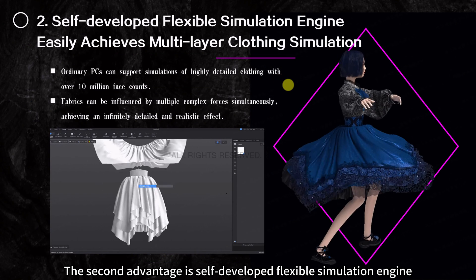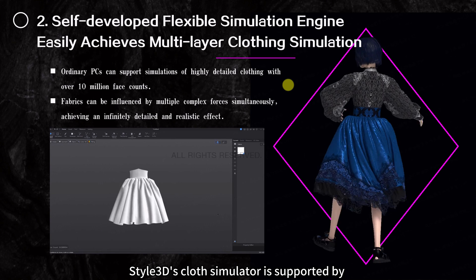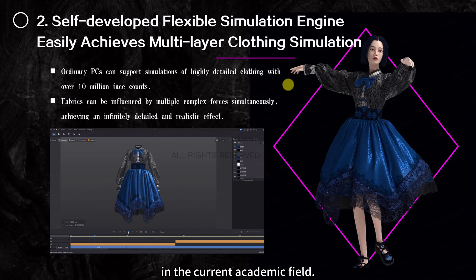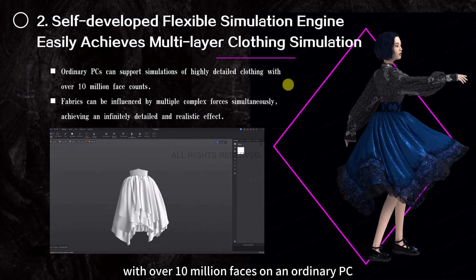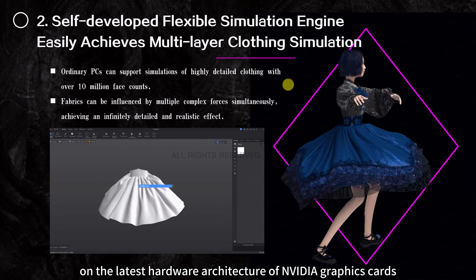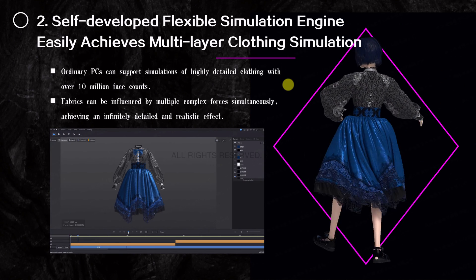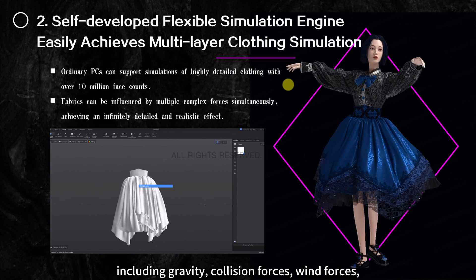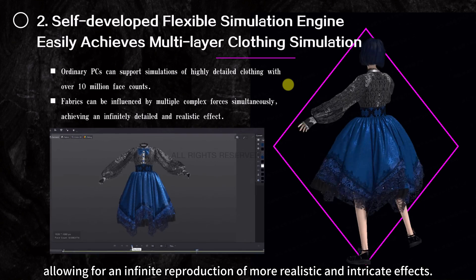The second advantage is a self-developed flexible simulation engine that can easily achieve multi-layer clothing simulation. Style 3D's cloth simulator is supported by the most advanced cloth simulation algorithms in the current academic field. It can perform high-precision clothing simulations with over 10 million faces on an ordinary PC, running on the latest NVIDIA GPU architecture for optimal parallel acceleration. Cloth can simultaneously be influenced by complex forces including gravity, collision forces, and wind forces, allowing infinite reproduction of realistic and intricate effects.